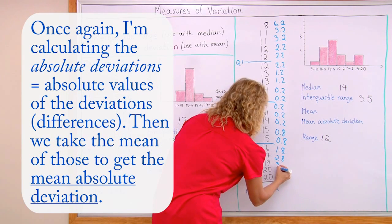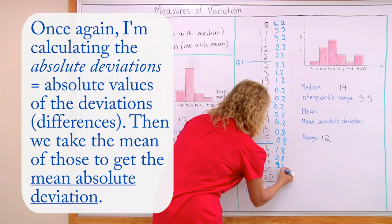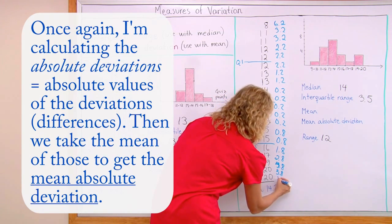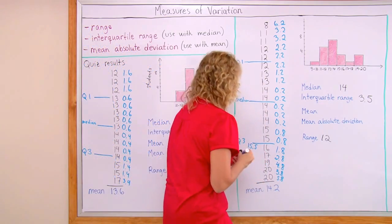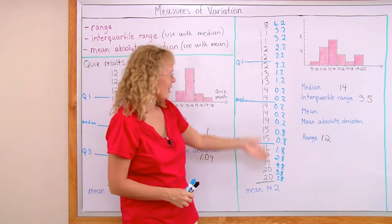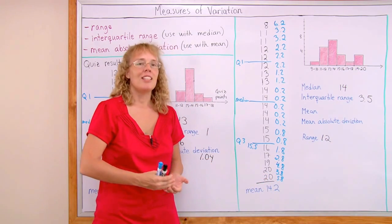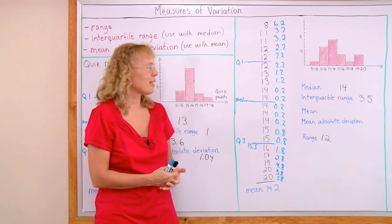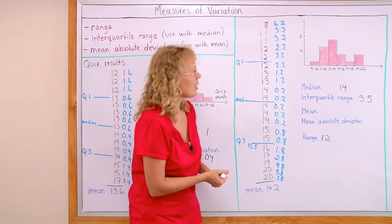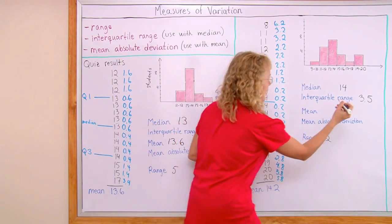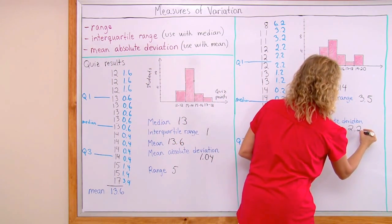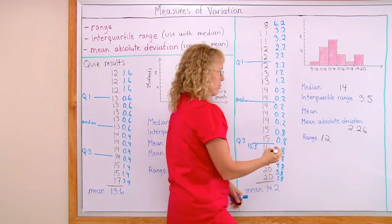I mean, I'm sorry, 4.8. And 5.8. Alright. So now that list is ready. And then you would add those up and divide by 20. However many there are. And I calculated it and it is 2.26. And the mean was 14.2.